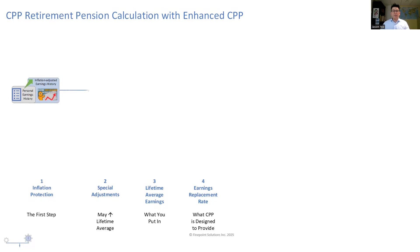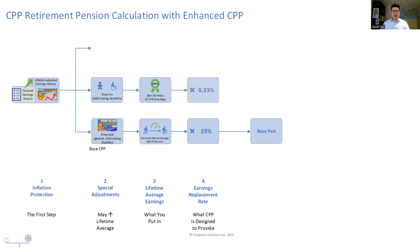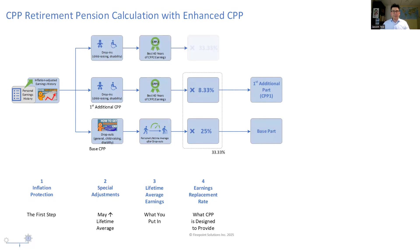First of all, the wage inflation adjustment remains the same. It's only after this part that things start to differ, because each of the CPP's three parts has to be calculated individually.